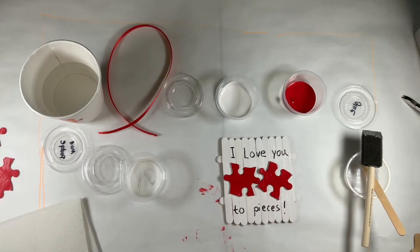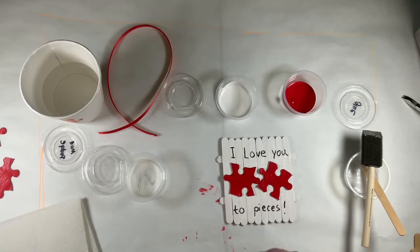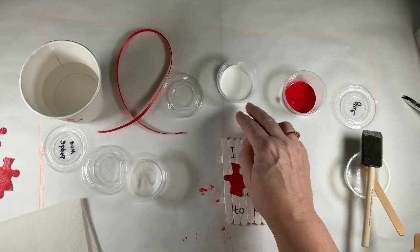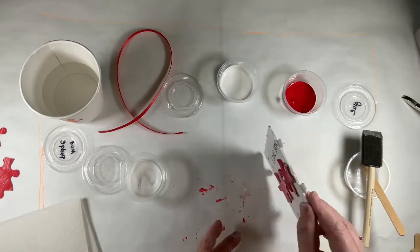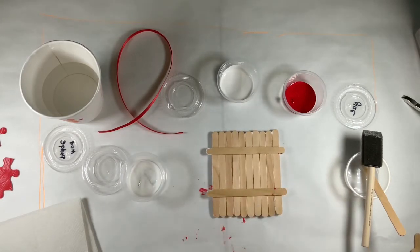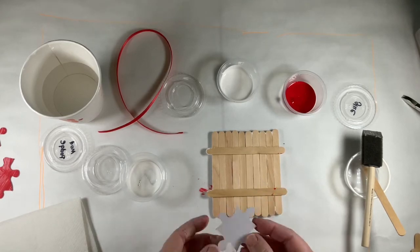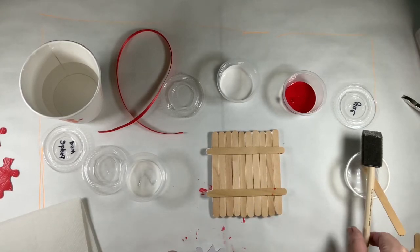And then the last thing we're going to do is we're going to glue on the ribbon so that you can hang this up. So turn this over and we have an extra puzzle piece in your pack. We're going to put a ton of glue on that.